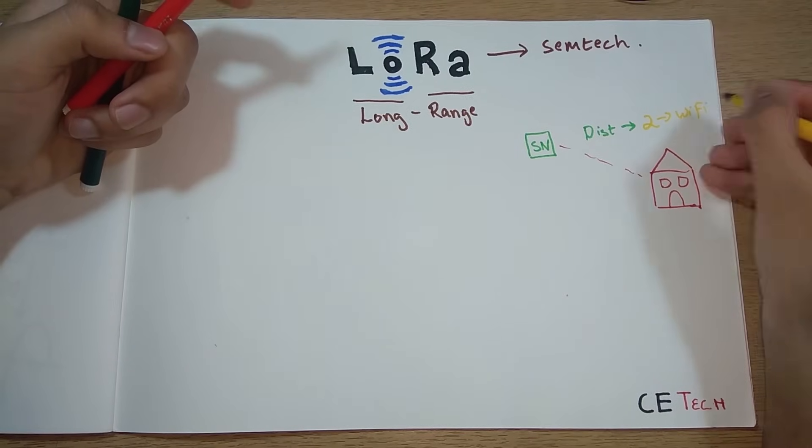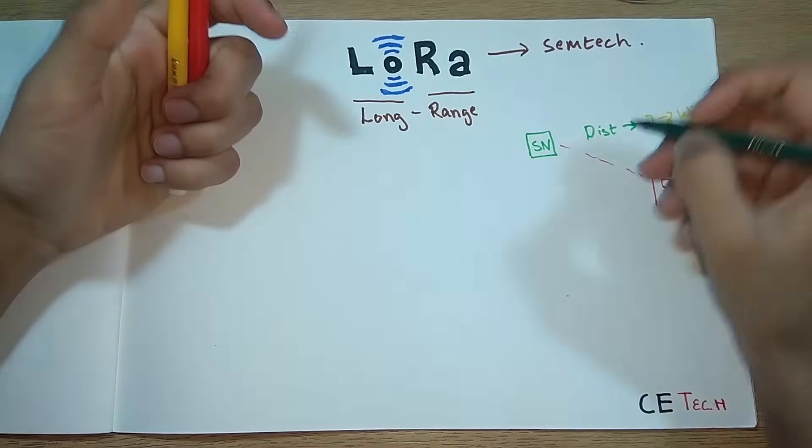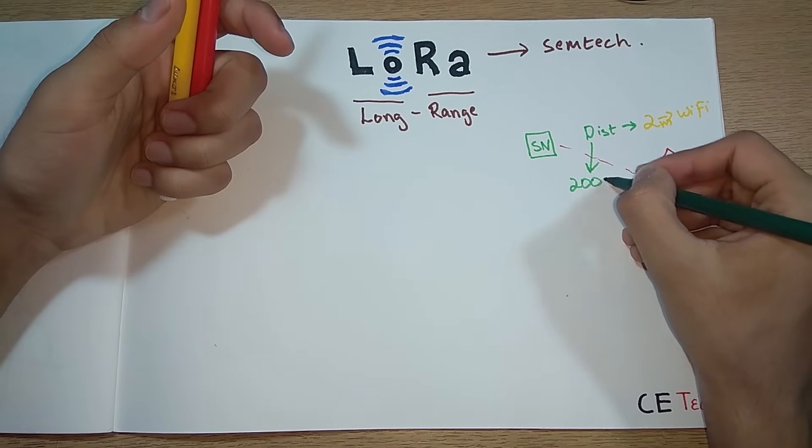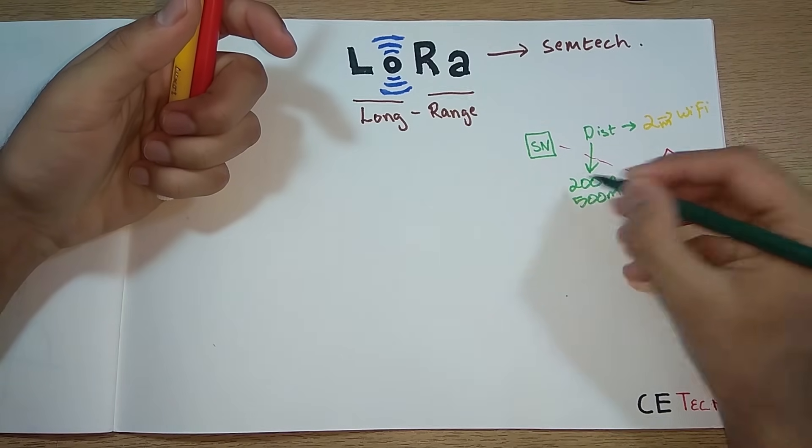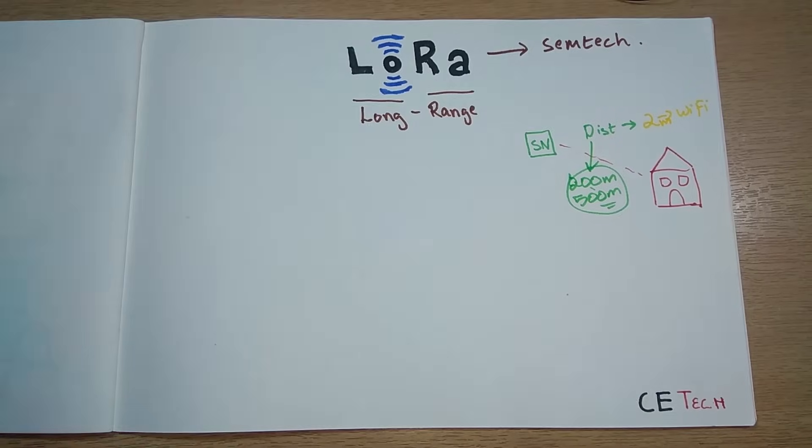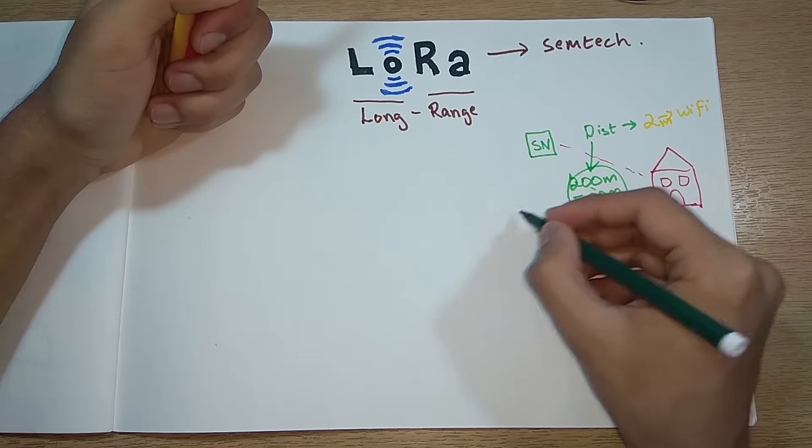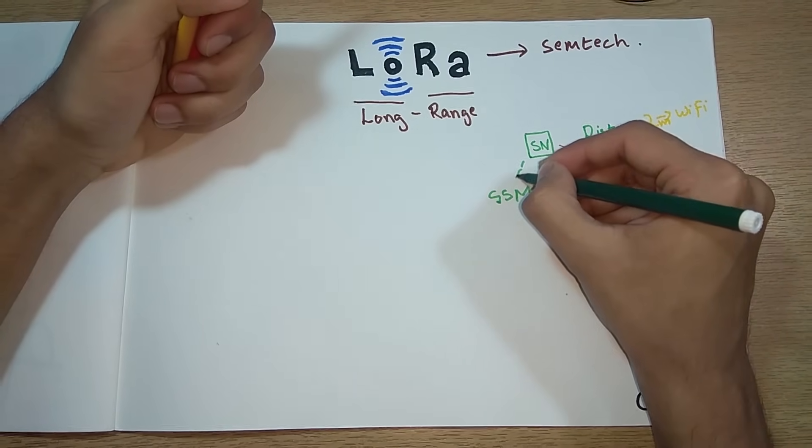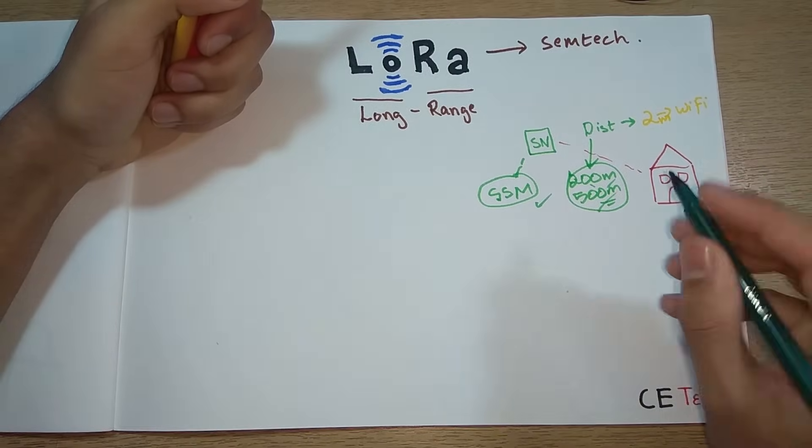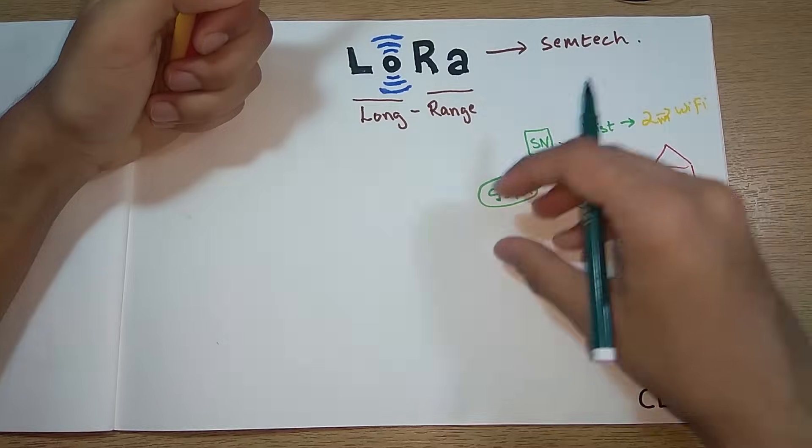But what if I say that this distance is not two meters but is 200 meters or maybe 500 meters? What solution will you apply? You might say that you will add a GSM module to this.